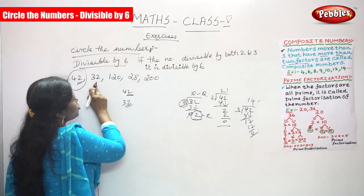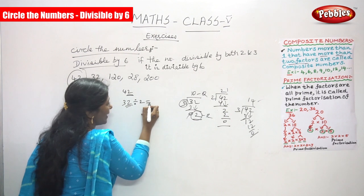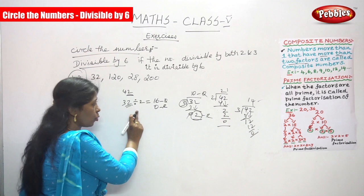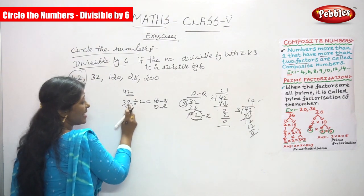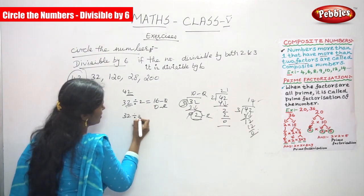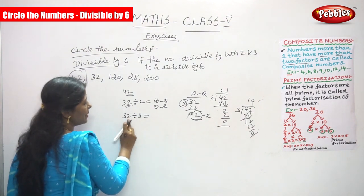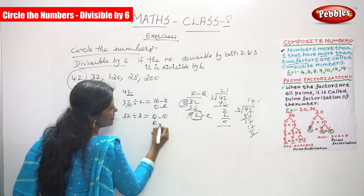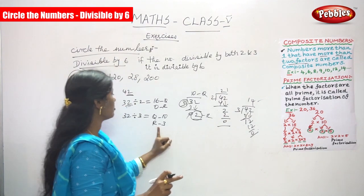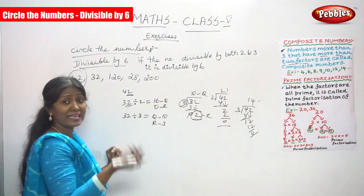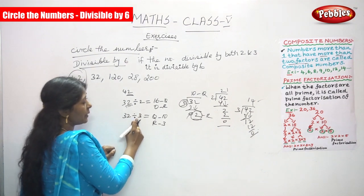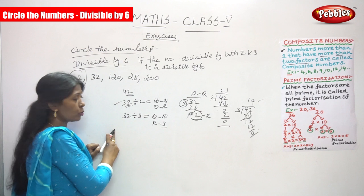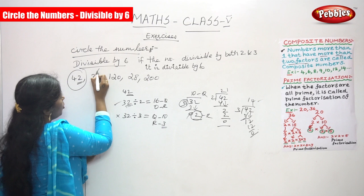This rule is not applicable for 32. It is divisible by 2 — quotient 16, remainder 0 — but not by 3, since the remainder is 2 when divided by 3. So 32 is not divisible by 6. Do not circle this number.